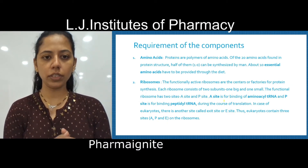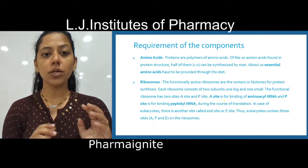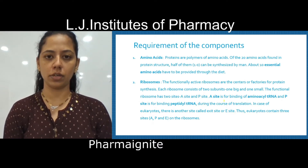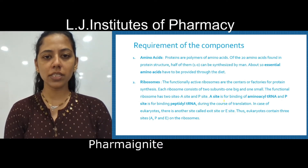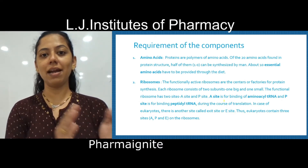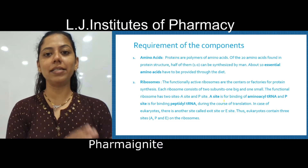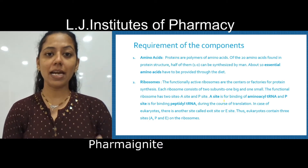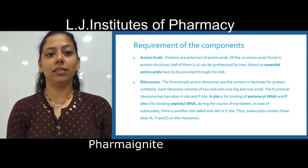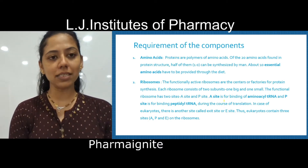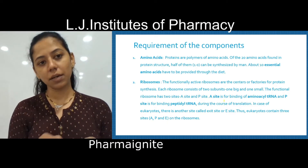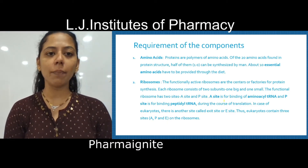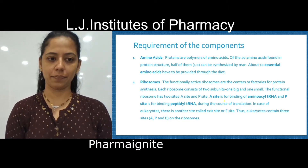Now let us discuss all these factors in detail. Amino acids — we have 20 different amino acids for protein structure. Amongst them, 10 are essential and 10 are non-essential. Essential means they are not synthesized within our body, but we need to supply them from diet.